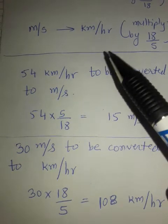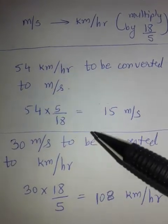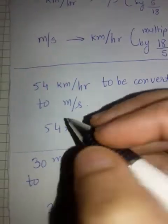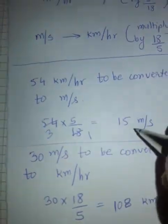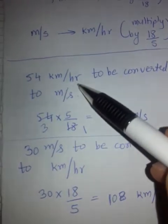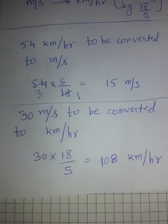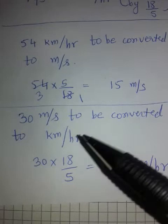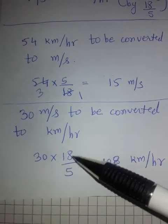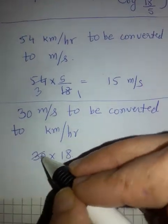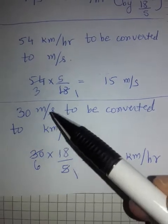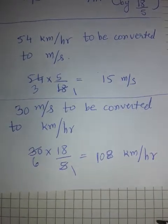To convert 54 km/h to m/s: multiply 54 by 5/18. 54 divided by 18 is 3, and 3 × 5 = 15. So 54 km/h equals 15 metres per second. To convert 30 m/s to km/h: multiply 30 by 18/5. 30 divided by 5 is 6, and 6 × 18 = 108. So 30 m/s equals 108 kilometres per hour.